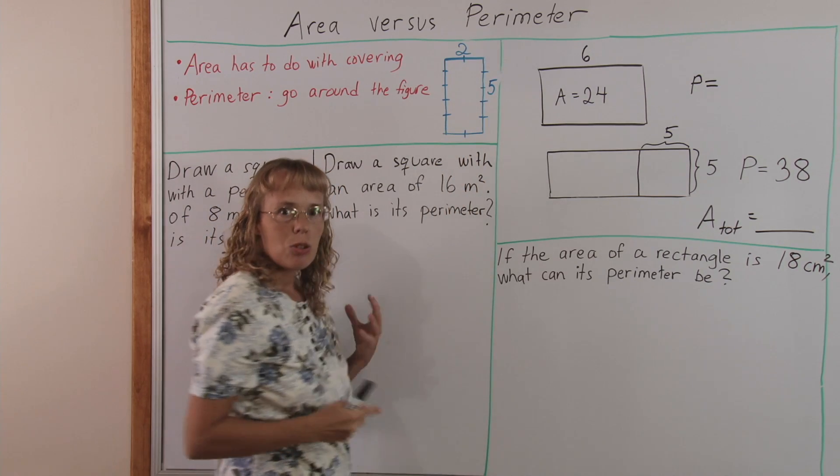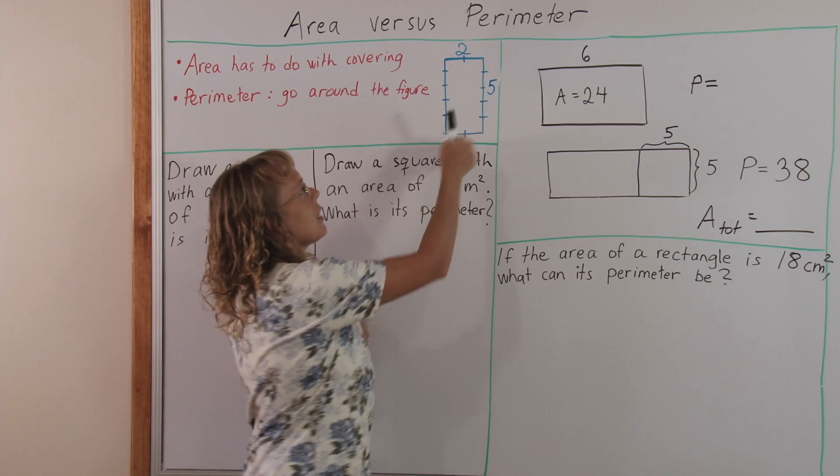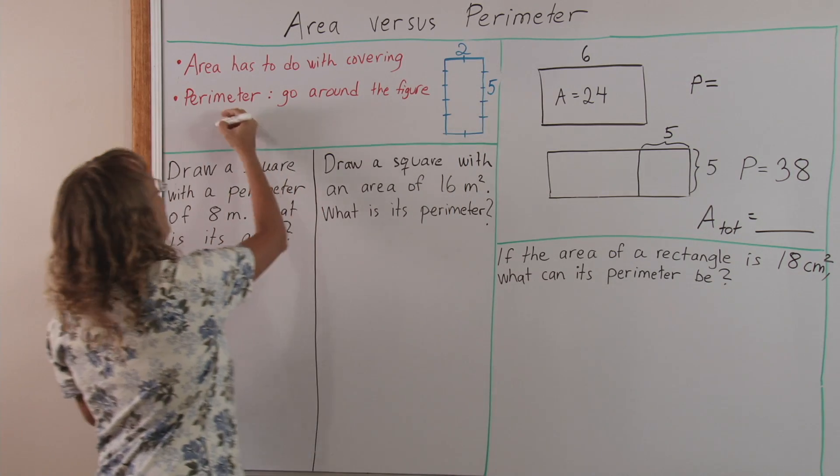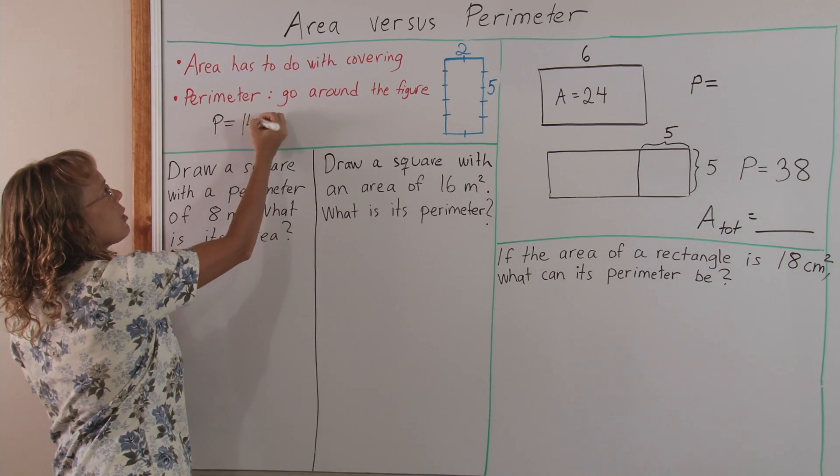And then two and five. So in total you go seven and seven, or fourteen. The perimeter of that rectangle is fourteen units.